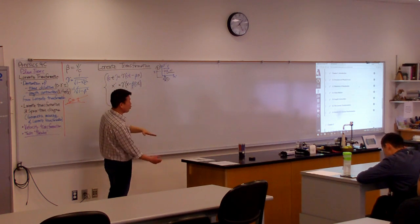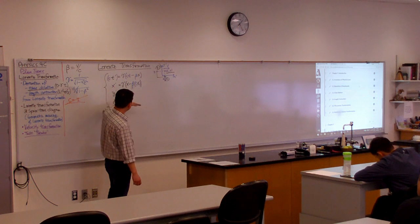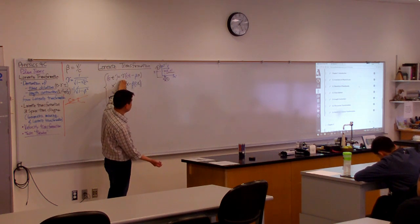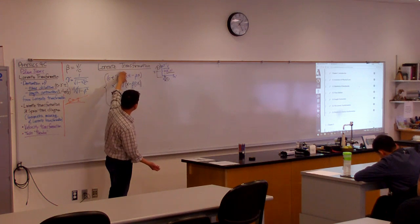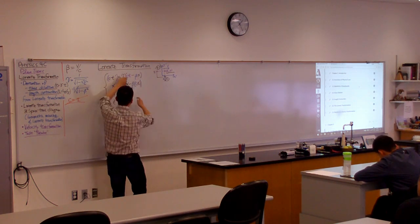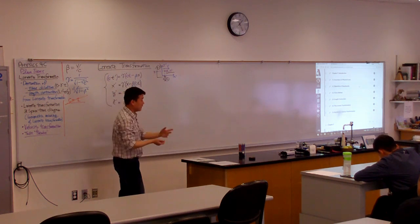So in Galilean transformation, in the low speed limit, in this term, you lose the gamma factor. It's more or less 1. In this term, not only you lose the gamma factor, but you also lose this term. That's why T prime is equal to T in Galilean limit.